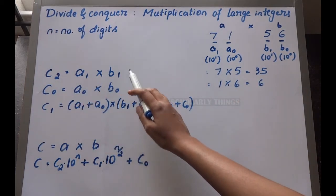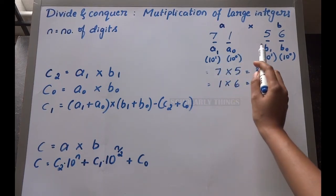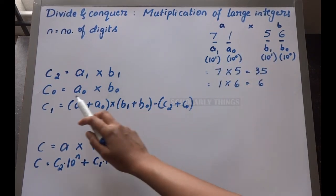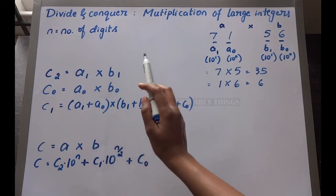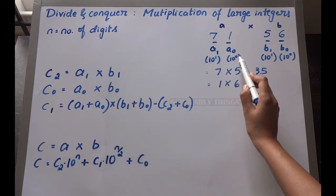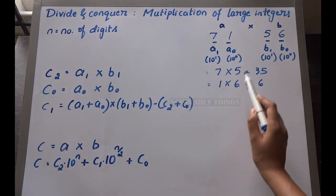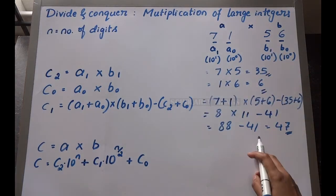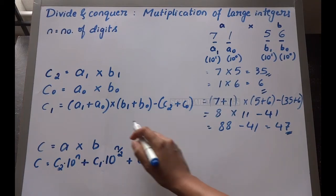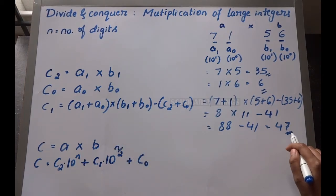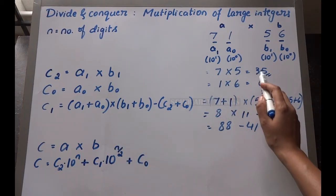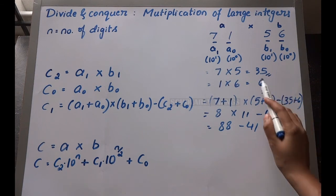c2 is the multiplication of numbers present in the 10¹ digit, that is a1 and b1. c0 is the multiplication of numbers present in the 10⁰ position, that is 1 and 6, a0 and b0. When we substitute all these values, we can find out c1 value to be 47. So now we found c2, c0, and c1.